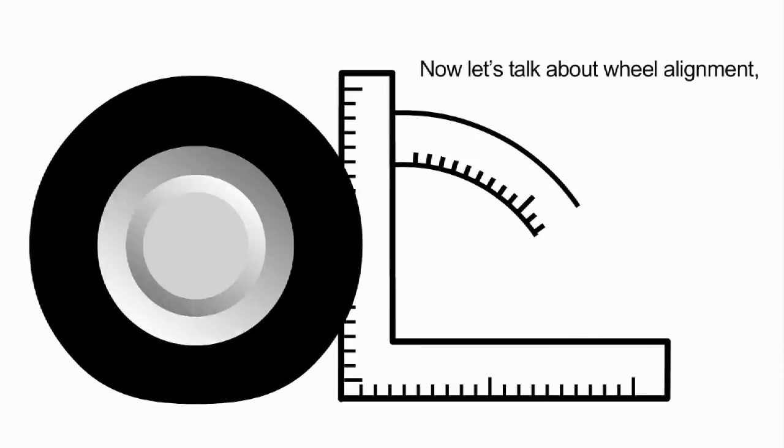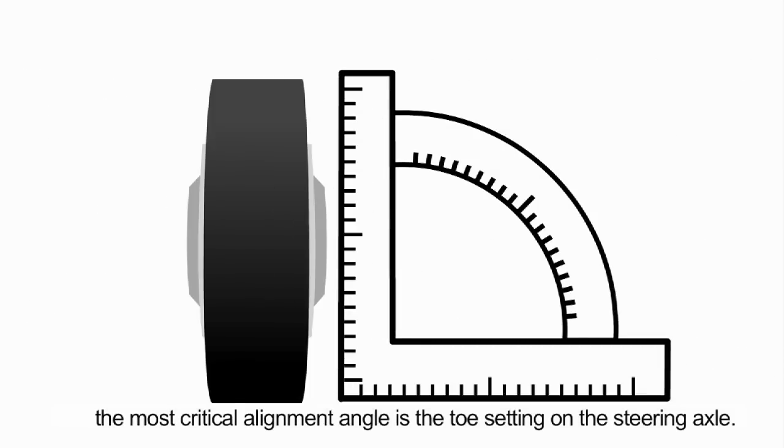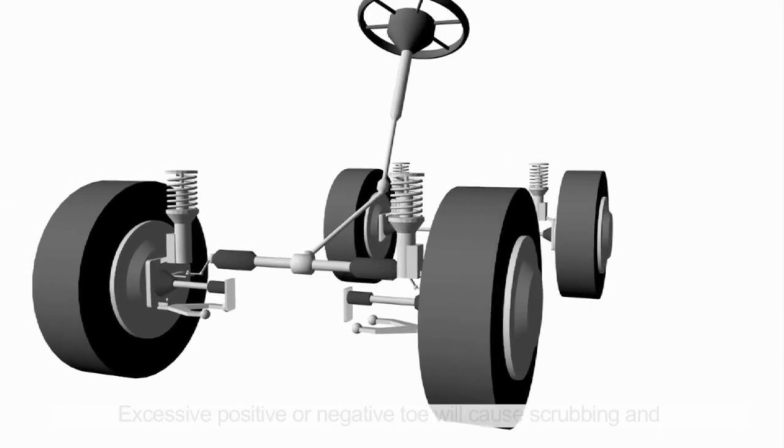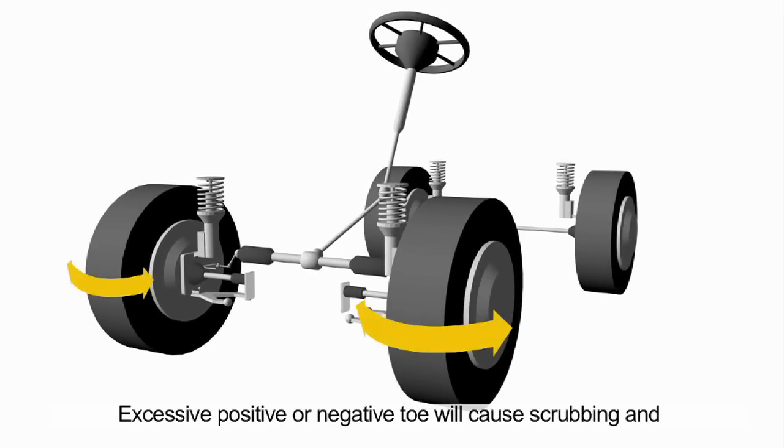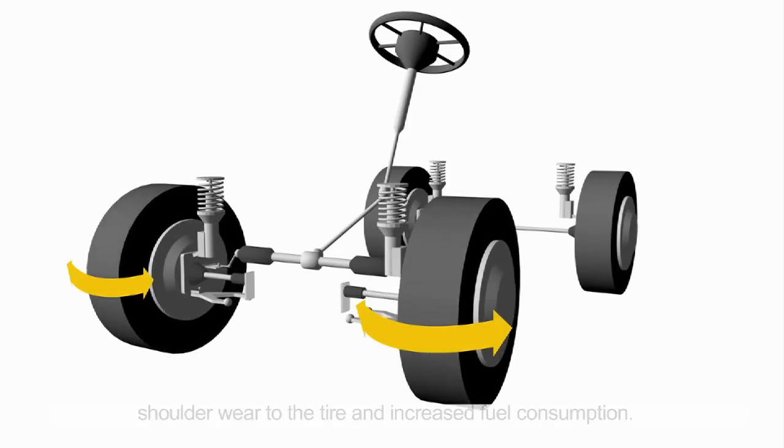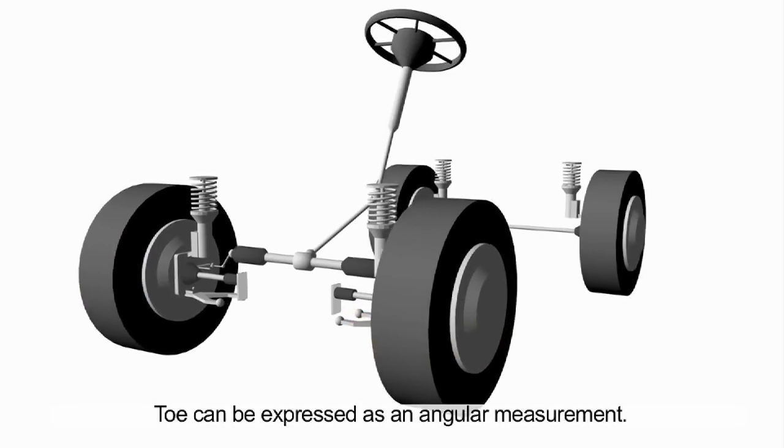Now, let's talk about wheel alignment. The most critical alignment angle is the toe setting on the steering axle. Excessive positive or negative toe will cause scrubbing and shoulder wear to the tire and increased fuel consumption. Toe can be expressed as an angular measurement.